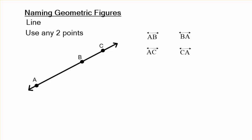It could be BA, AC, CA, BC, or CB. Any two points. Don't use three, don't use one.